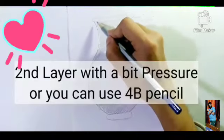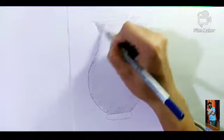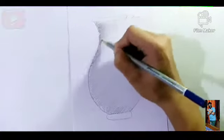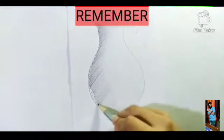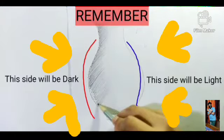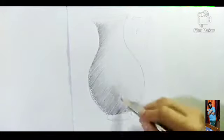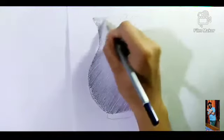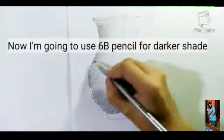Now the second layer with high pressure, using a 4B pencil. I am using the Artline pencil. It is best for beginner and up to pro level. This is the best, I think, so I recommend it to you all. Now 6B pencil for the darker set.